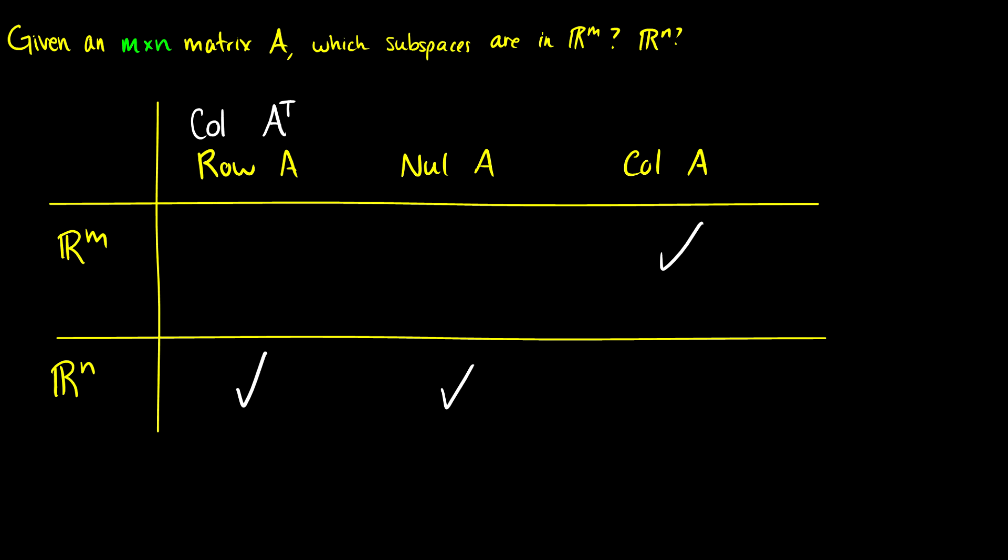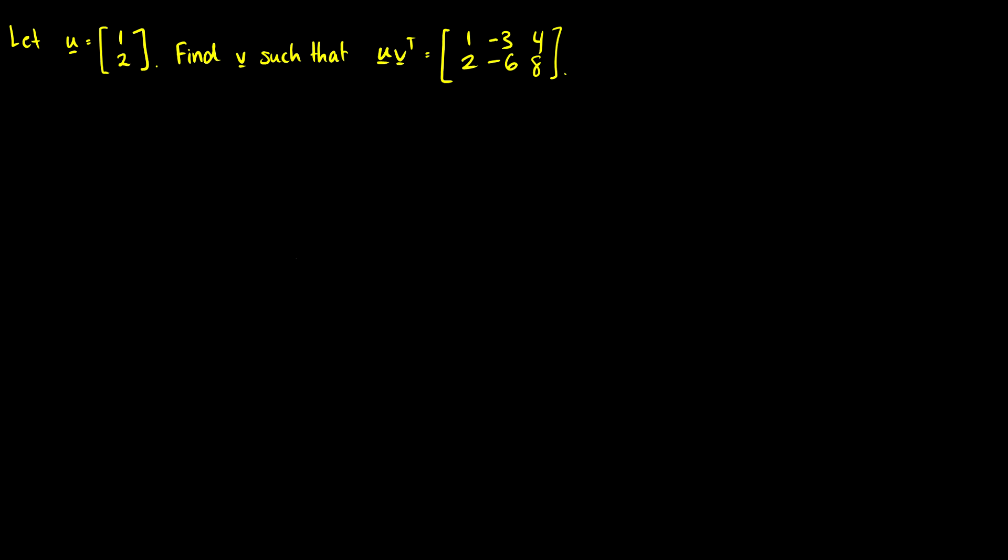Second question, a little more computational. We have a vector u equal to [1, 2] and we want to find a vector v such that u times v transpose is equal to the matrix [1, -3, 4; 2, -6, 8].